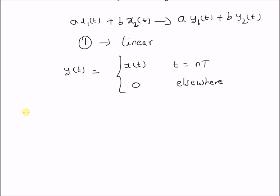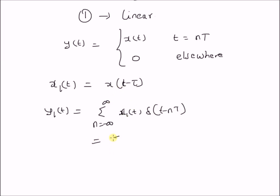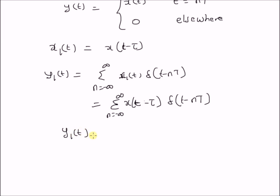Now let us verify whether the system is time invariant or not. Consider an input x1(t) equal to x(t minus tau). By using equation 1, the corresponding output y1(t) equals the sum from n equals minus infinity to plus infinity of x1(t)·delta(t minus nT), which becomes the sum of x(t minus tau) multiplied by delta(t minus nT). Clearly, y1(t) equals x(t minus tau) only when t equals nT, and 0 elsewhere.